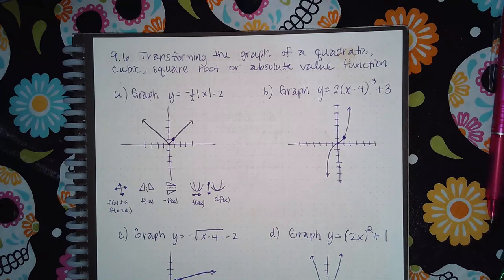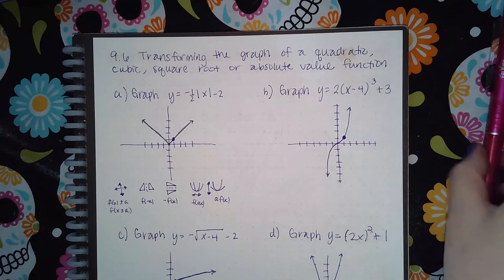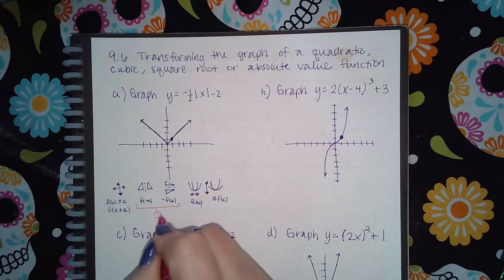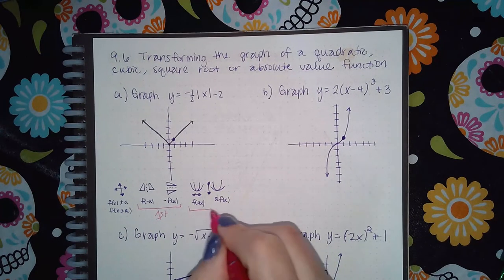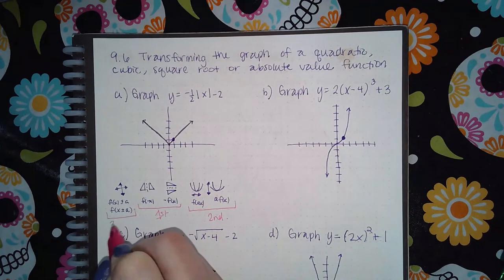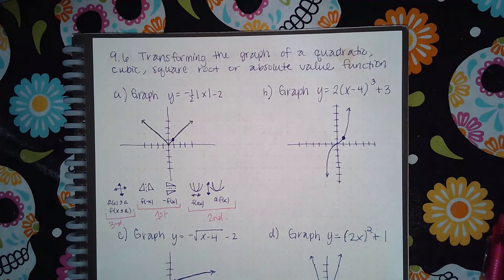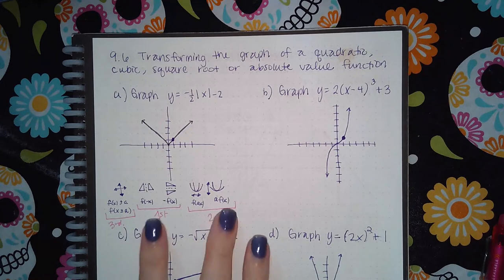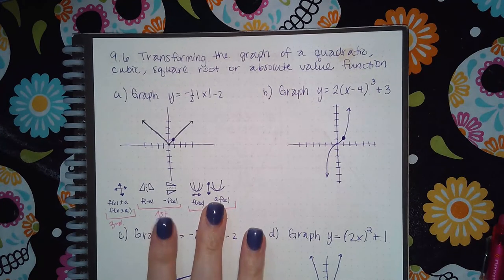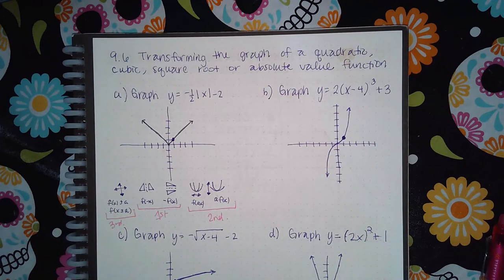For this particular problem, if you have reflections or coefficient scaling happening, you want to do those first. Then if you have any adding or subtracting shifts, you do those second and last. If you watched the previous topic's video, it explains that you have to do the multiplication transformations first, then the adding and subtracting transformations last — just like the order of operations: multiply first, then add and subtract.